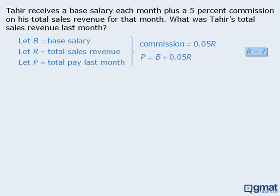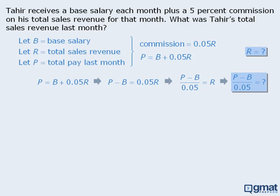We want to find the value of R, and we already have an equation with R in it. So let's see if we can isolate R by subtracting B from both sides and then dividing both sides by 0.05. That gives us R equals P minus B over 0.05. We can now rephrase the target question as: what is the value of P minus B over 0.05? At this point, we can see exactly what sort of information will allow us to solve it — we need the value of P and B, or we need the value of P minus B.